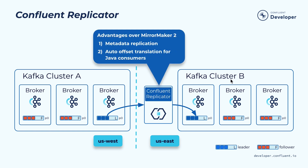Another tool from Confluent is called Replicator. It improves on Mirror Maker in two ways. First, when mirroring data from source to destination, in addition to the actual data it also mirrors metadata such as topic configuration and number of partitions. Second, it addresses offset translation problems: the offset is still not preserved between source and destination, but Replicator provides a library you can embed in your Java application that performs offset translation automatically when you switch your consumer from one data center to another.